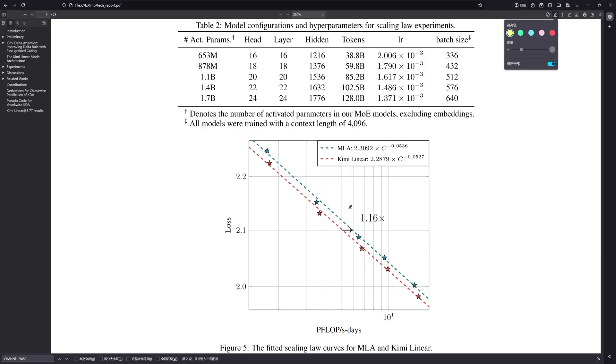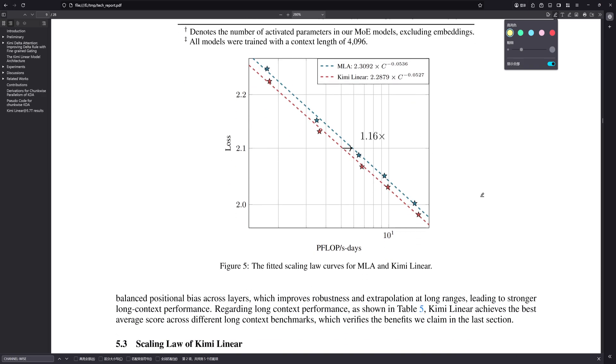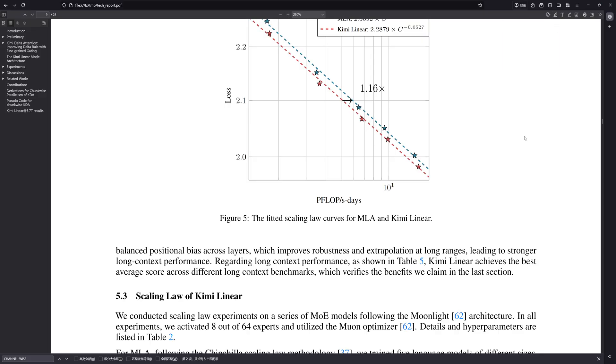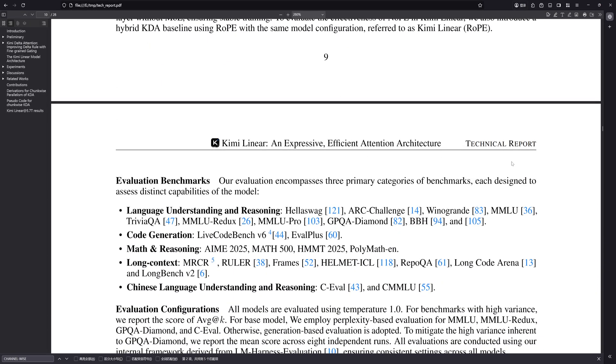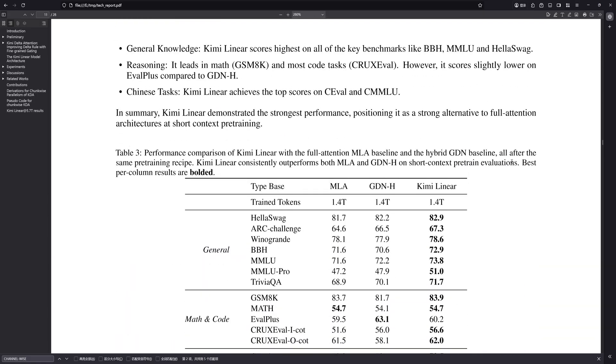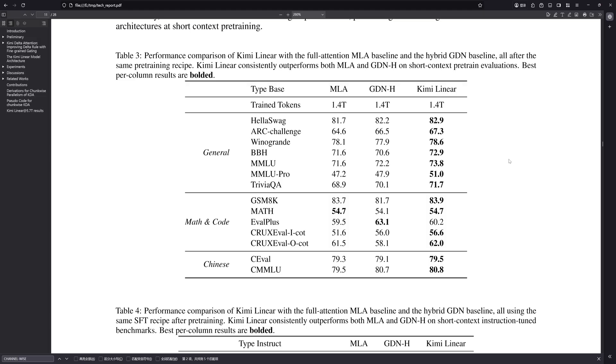So in conclusion, I maintain that Kimi Linear, powered by the innovations in KDA, that precise channel-wise gating, and the optimized DPLR demonstrates that linear attention can be engineered into a truly expressive position-aware component. It's not just patching holes, it's competing with, and in some demanding scenarios, potentially surpassing full attention. This, I think, paves a clear path towards LLMs that are both high quality and genuinely efficient to deploy.